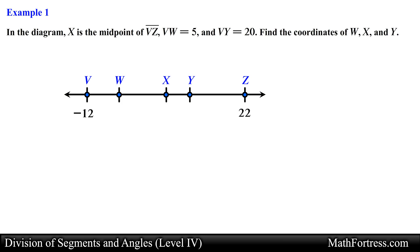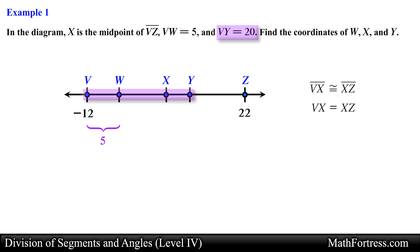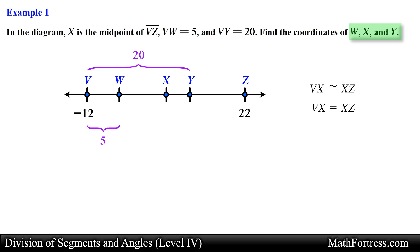We know that point X is the midpoint of segment VZ. This means that segments VX and XZ are congruent, so their lengths are equal to one another. We also know that the length of segment VW is equal to 5 and the length of segment VY is equal to 20. With this information we can determine the coordinates of each of these three points.